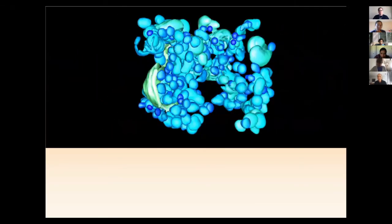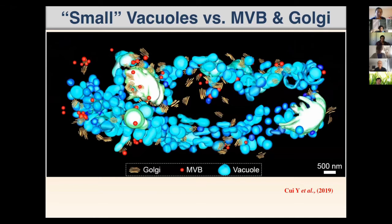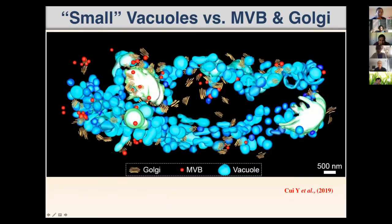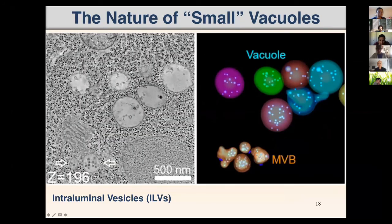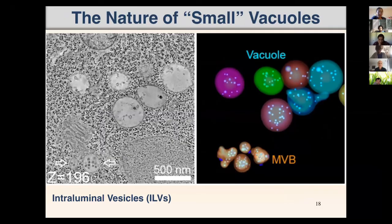You can also visualize the MVBs in red and the Golgi together, and you can really see the whole cell contains many MVBs, Golgi, and small vacuoles. Zooming in, you can see three structures: the small vacuole, the multivesicular body, and the Golgi. Quite surprisingly, the small vacuoles also contain intraluminal vesicles. This allows us to conclude that small vacuoles are mainly derived from MVB fusion.